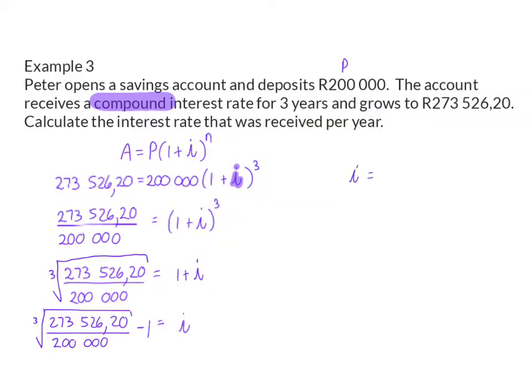This decimal value is 0.11, so the value for i is 0.11. And then I'm reminding you that to calculate the interest rate, I still need to multiply by 100 to get 11% per annum.